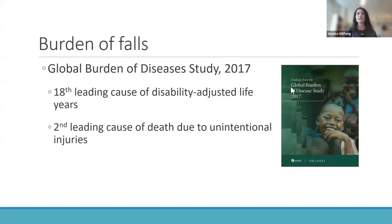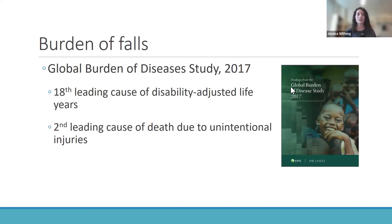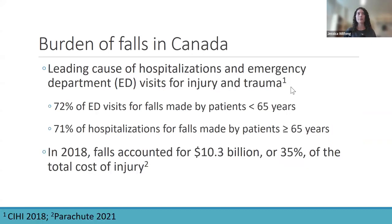A little bit of background on the burden of falls in the world. The Global Burden of Diseases Study in 2017 listed falls as the 18th leading cause of disability-adjusted life years — defined as the number of healthy years lost due to ill health, disability, or early death. Falls were also listed as the second leading cause of death due to unintentional injuries in the world. Specifically in Canada, falls are the leading cause of hospitalizations and emergency department visits for injury and trauma.